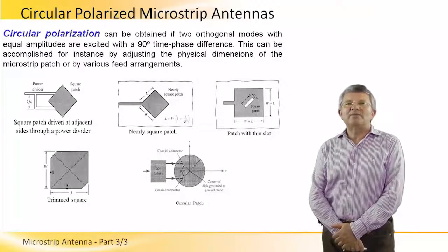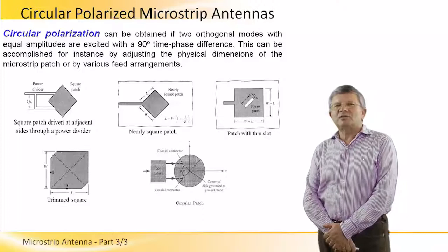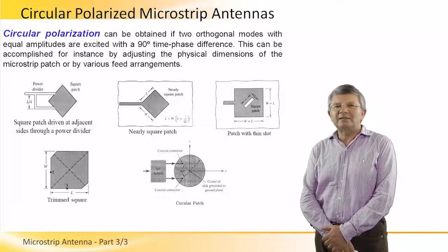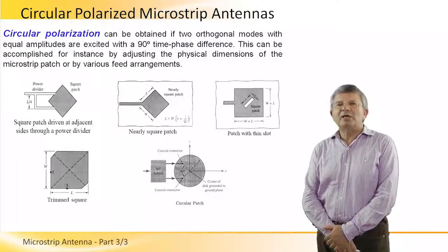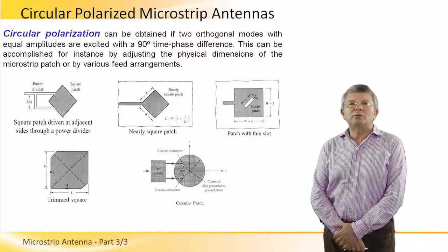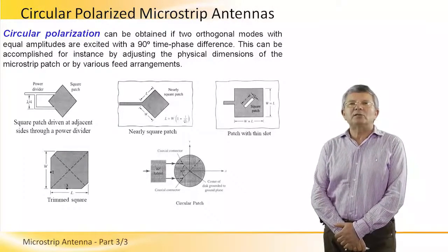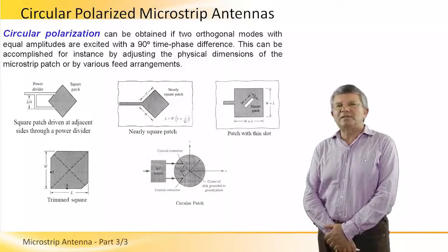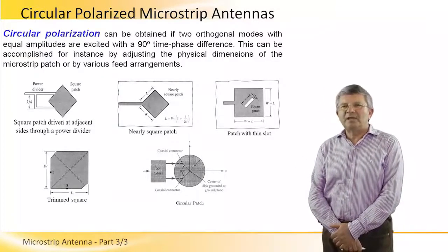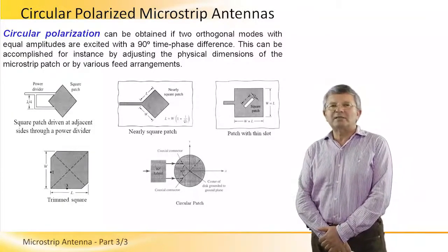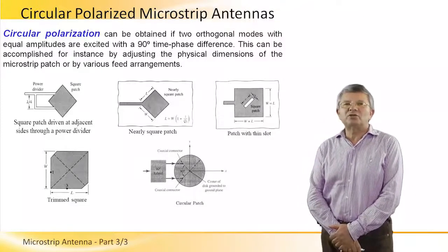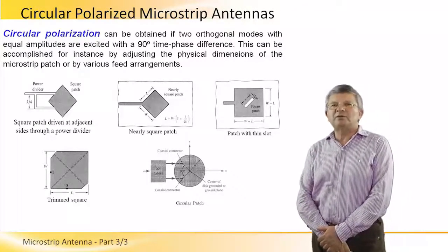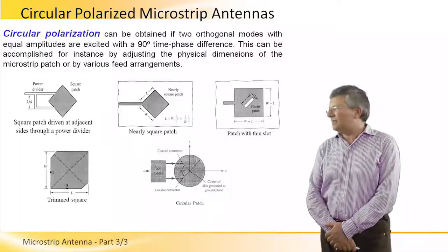How can this be done? In order to obtain circular polarization, we need to excite in the cavity domain of the patch two orthogonal modes with equal amplitudes, and they should be excited with a 90-degree time phase difference. This can be accomplished, for instance, by adjusting the physical dimensions of the microstrip patch or by various feed arrangements, as we can see here.